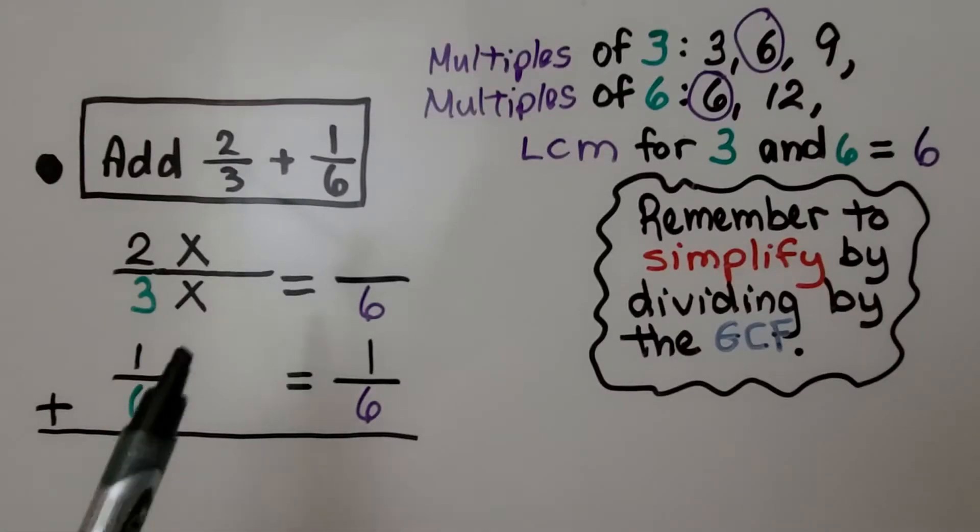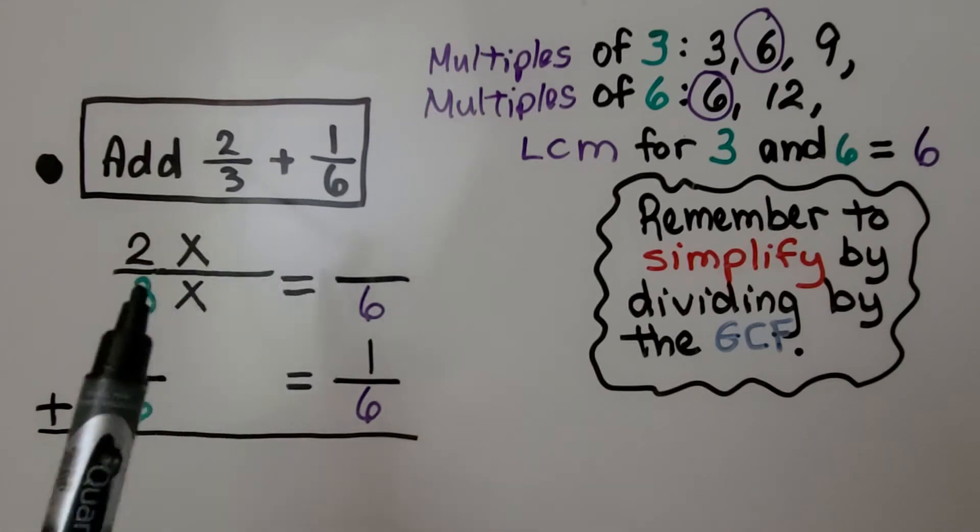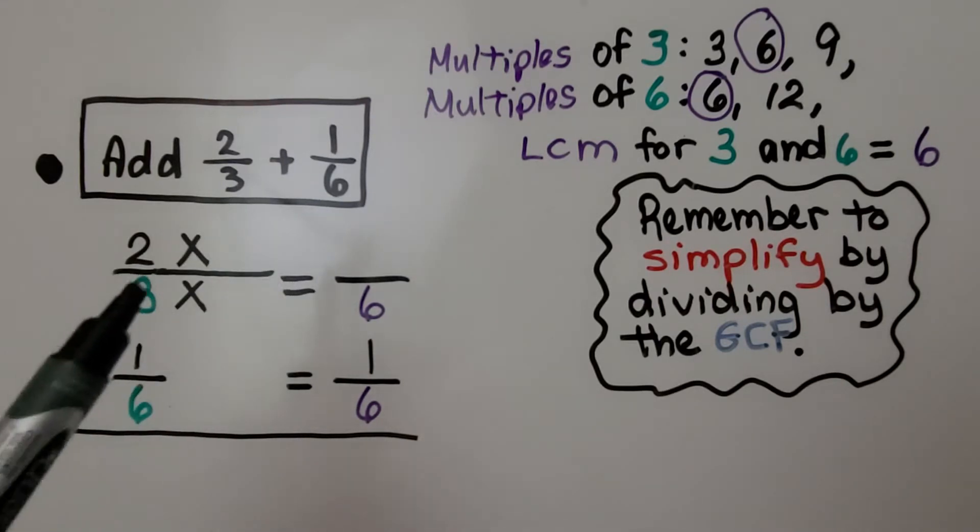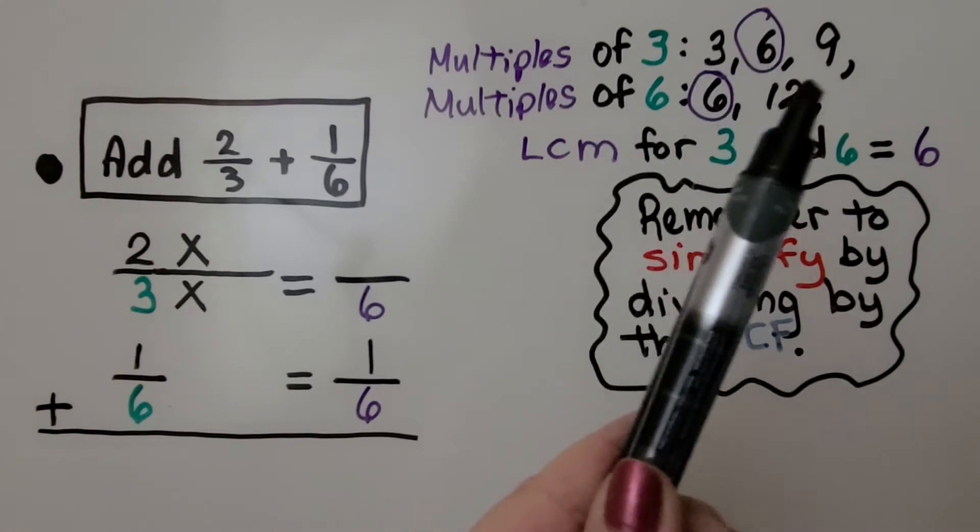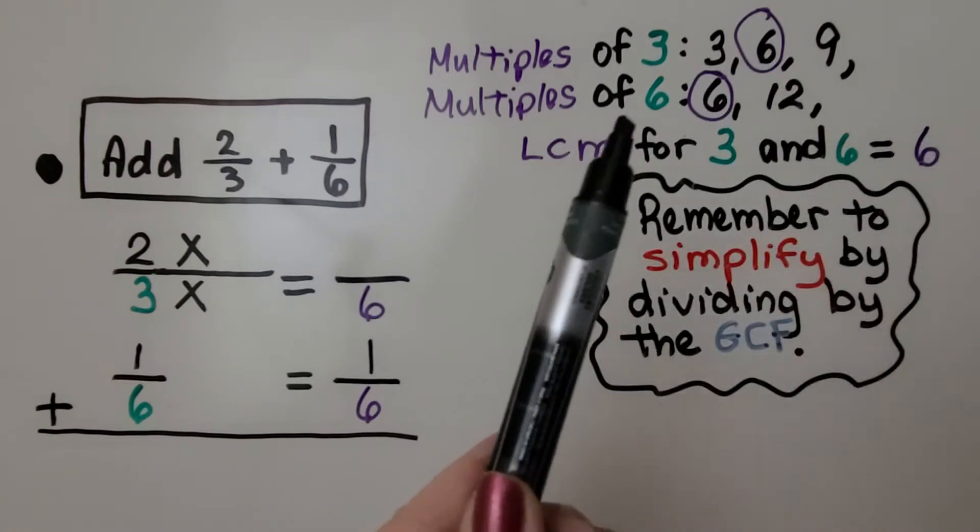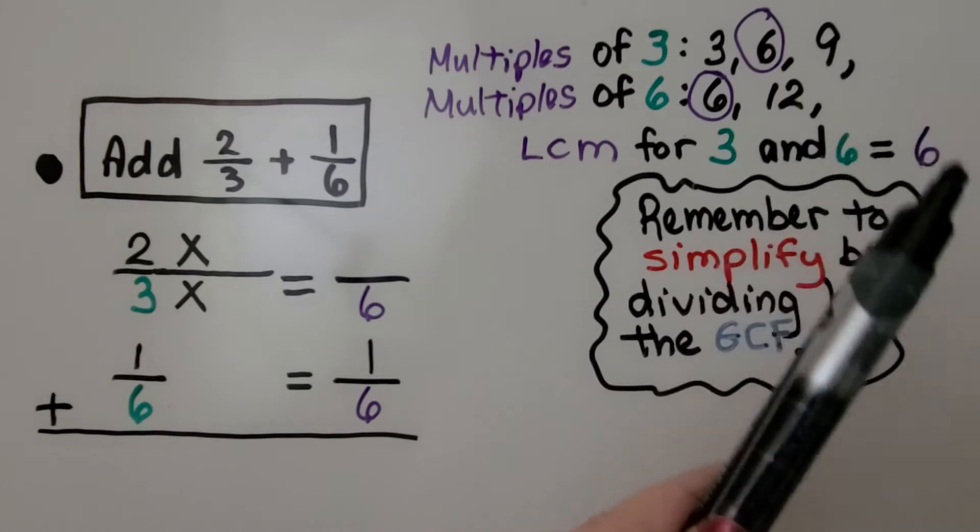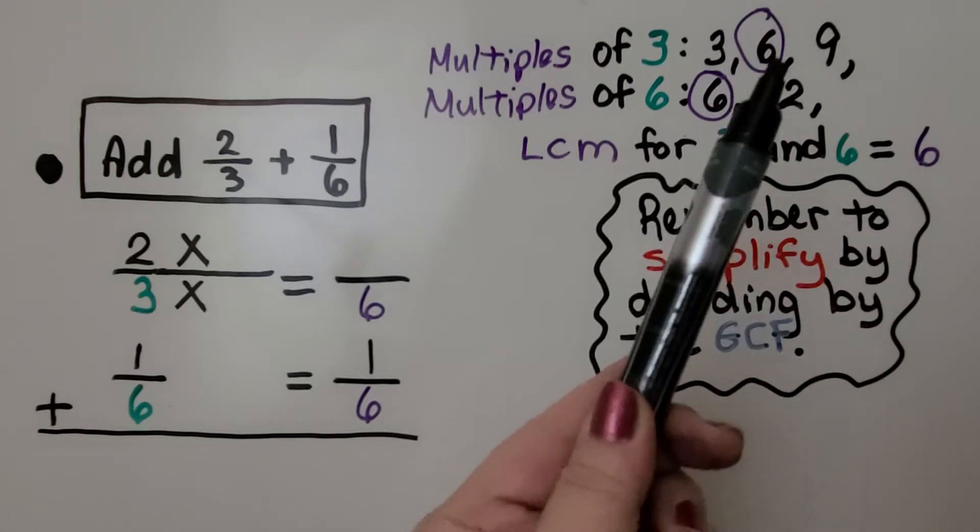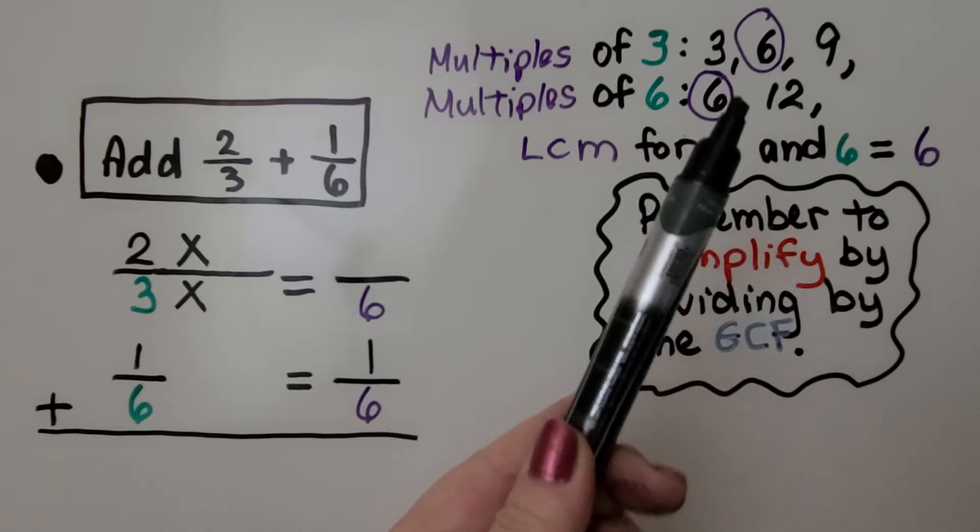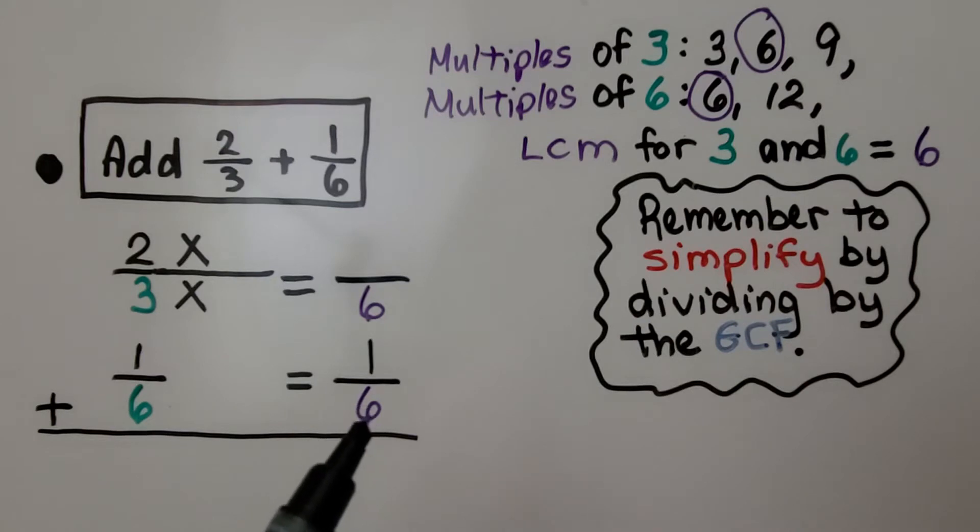Here we need to add 2/3 + 1/6. They have different denominators, and we cannot add them until they have the same denominator. So, the multiples of 3 are 3, 6, 9, and so on. The multiples of 6 are 6, 12, 18, 24, and so on. But the least common multiple for 3 and 6 is 6. It's the lowest multiple they have in common. We're going to use that for our new denominator.